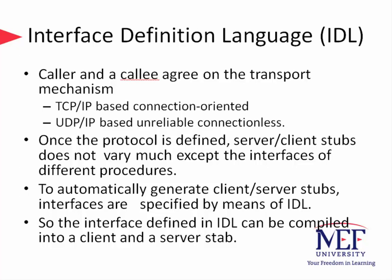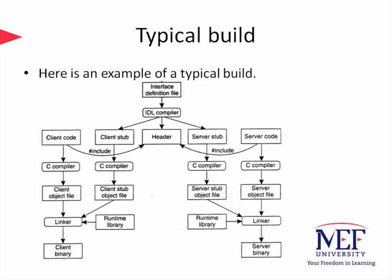Speaking of IDL compilers, let us see a typical build scenario. As shown in this picture, the IDL compiler takes an interface definition language file and generates those stubs. It also generates headers to be included by the manually written client and server codes. After having server code, client stubs, and headers ready, we run a C compiler — or this could be a Fortran compiler — to generate four object files: client, client stub, server, and server stub object files. With the runtime library calls, the linker finally generates the binaries for the client and server code that will allow us to make remote procedure calls.